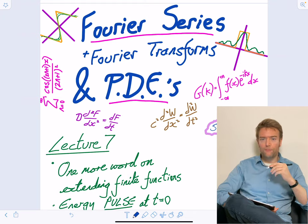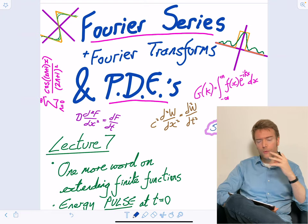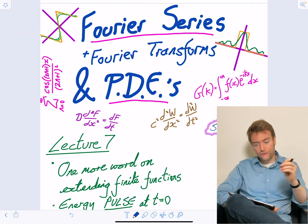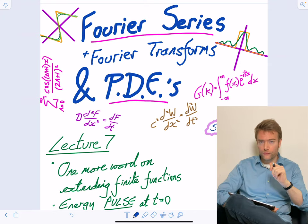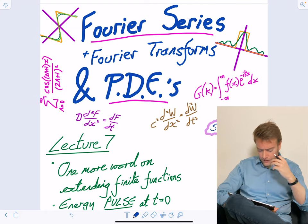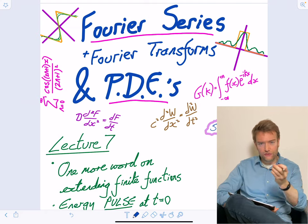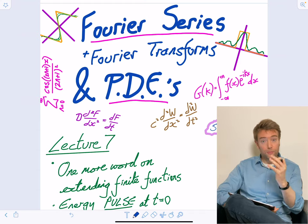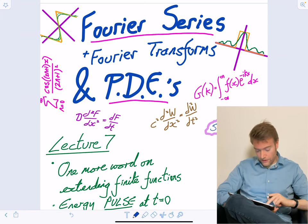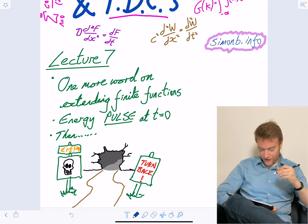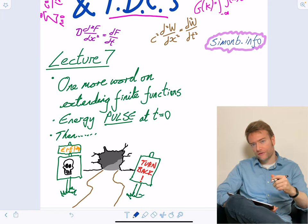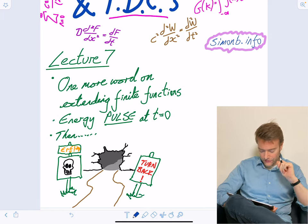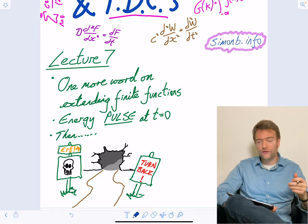This is the penultimate lecture and we're going to wrap up our thinking about diffusion, which includes diffusion of heat and also of matter, such as gas or an itinerant species of atom that can move through another material. I'm going to start by covering something I didn't quite manage to get to in the last lecture, which relates to the proper way to extend a Fourier series when we want to take a situation defined only between two points to make it into a periodic function.